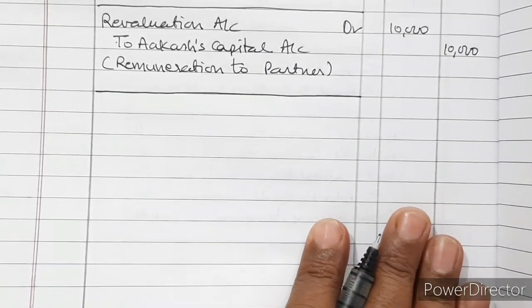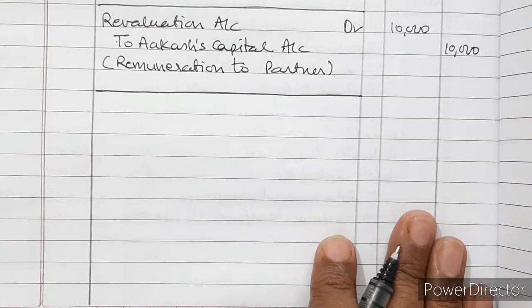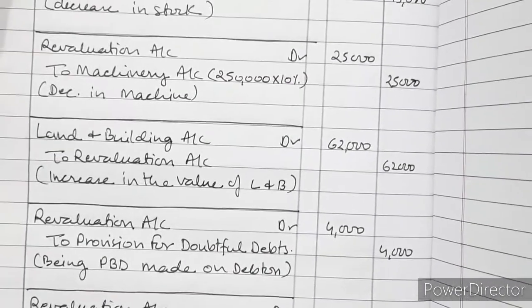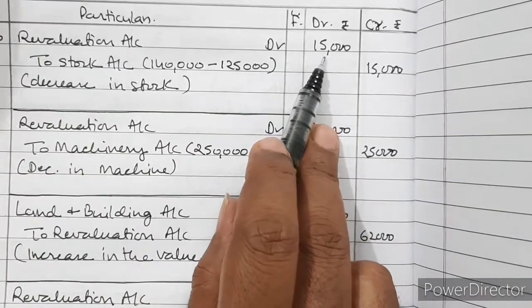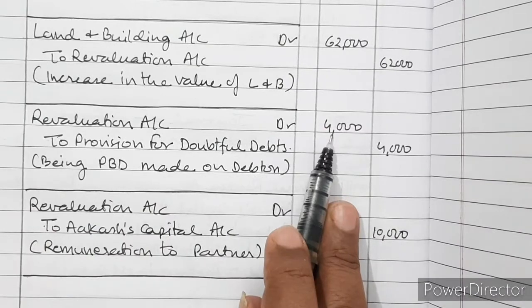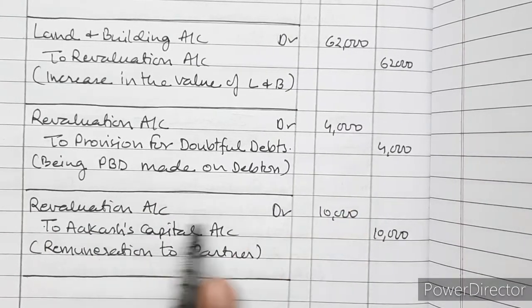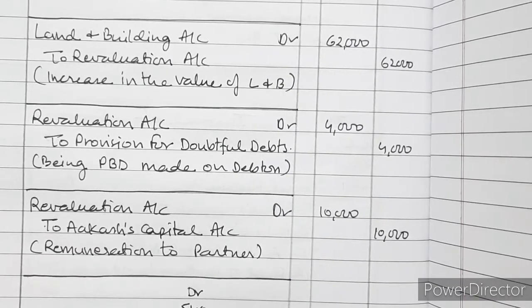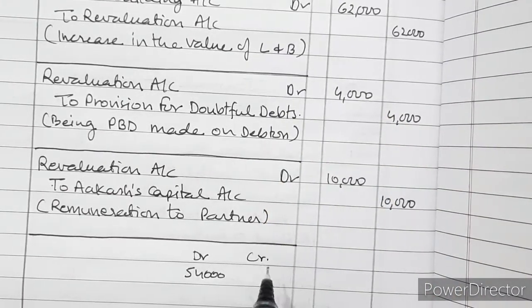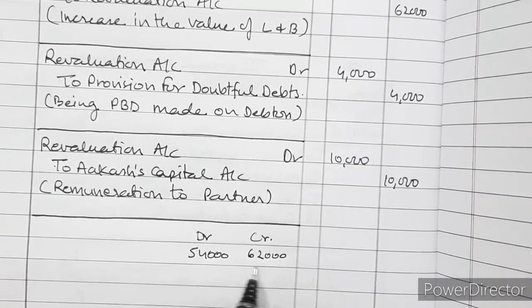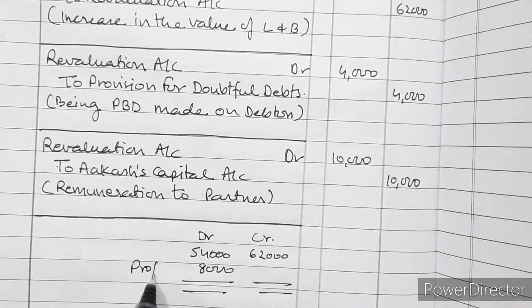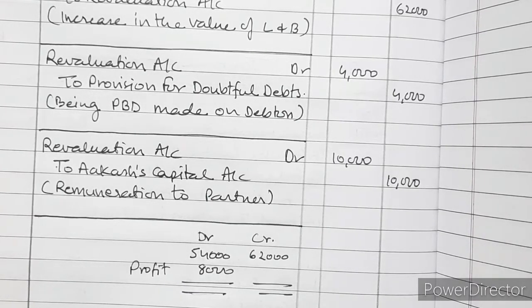To calculate profit or loss, we check the debit and credit totals of the revaluation account. Debit side: Rs. 15,000 (stock) + Rs. 25,000 (machinery) = Rs. 40,000, plus Rs. 4,000 (provision) = Rs. 44,000, plus Rs. 10,000 (remuneration) = Rs. 54,000. Credit side: Rs. 62,000 (land and building). The difference between Rs. 54,000 and Rs. 62,000 is Rs. 8,000, which is profit on revaluation.